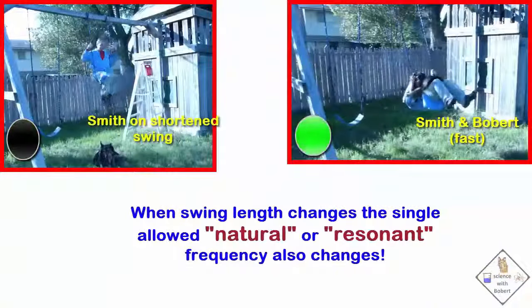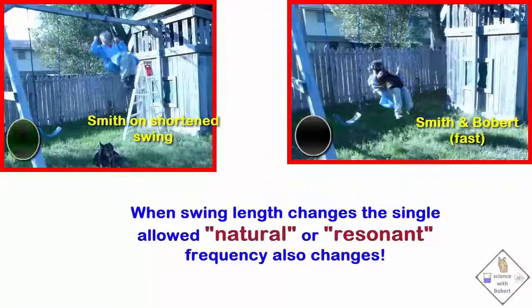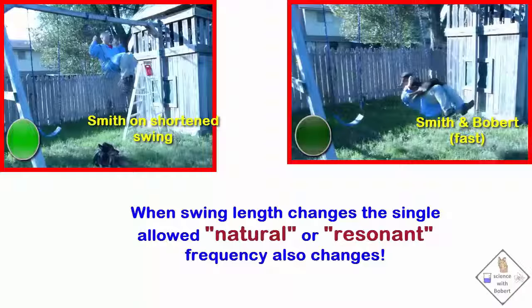For each length of the swing, there is a different frequency. This frequency is called the natural, or resonant frequency of the swing.